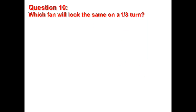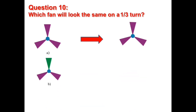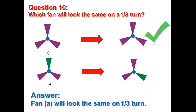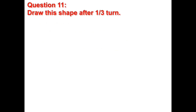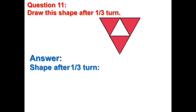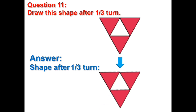Which fan will look the same on a one-third turn? Fan A will look the same on a one-third turn. This is the shape after one-third turn.